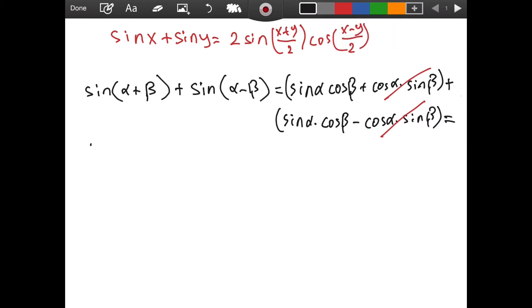So we get two sine of alpha times cosine of beta.